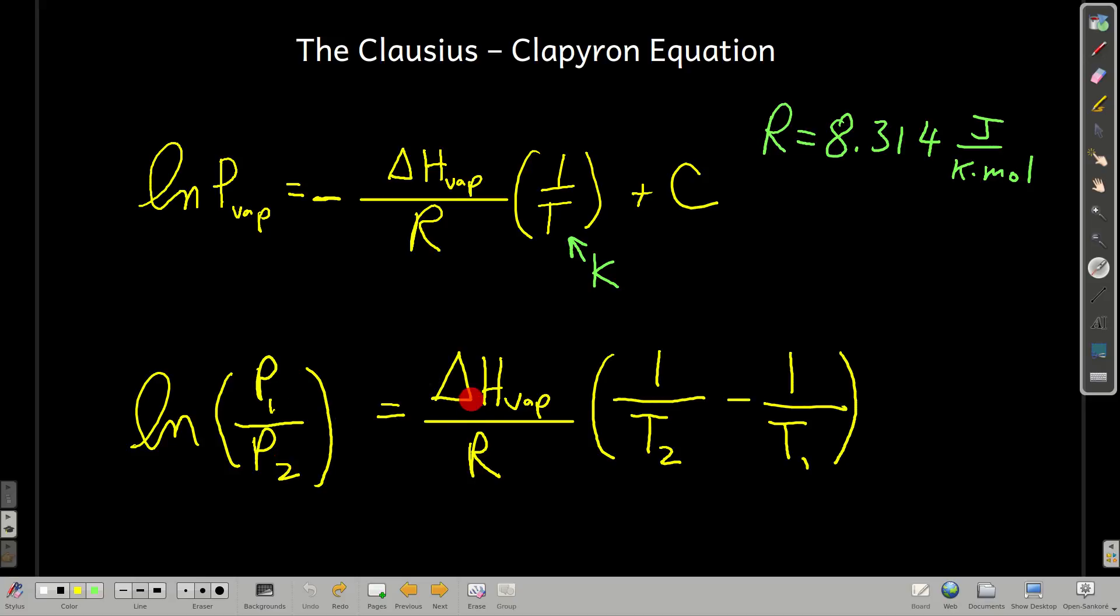Another useful form of this equation, Clausius-Clapeyron equation, is this. If we were to take the vapor pressure at two different temperatures, P1 would be the vapor pressure at temperature 1, P2 would be the vapor pressure at temperature 2, and subtract the Clausius-Clapeyron equation for P2 from P1, it looks like this: natural log of P1 over P2 equals ΔHvap over R times 1 over T2 minus 1 over T1.